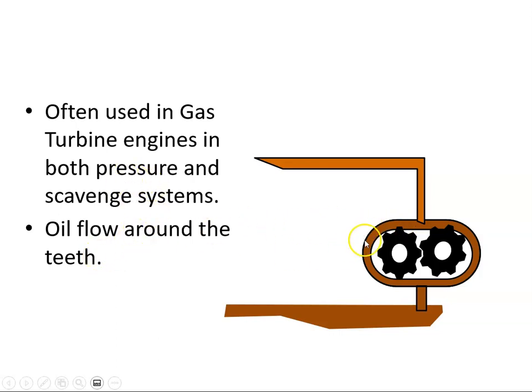The gear-type pump is often used in gas turbine engines, both on the pressure and on the scavenge systems. Just to note, the oil is around the teeth.